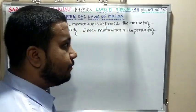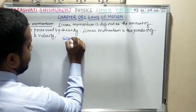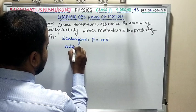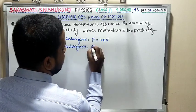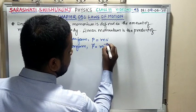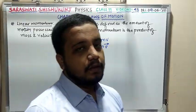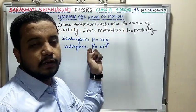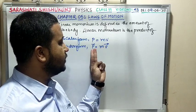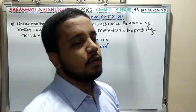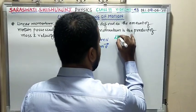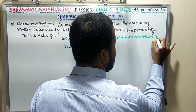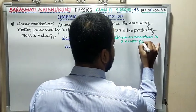The scalar form of momentum is written as P = mv. The vector form is P⃗ = mv⃗, where mass is scalar and velocity is vector. Linear momentum is a vector quantity because velocity is a vector — the product of a vector and a scalar gives a vector.